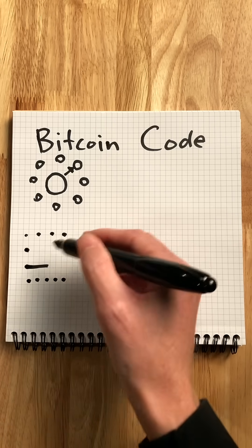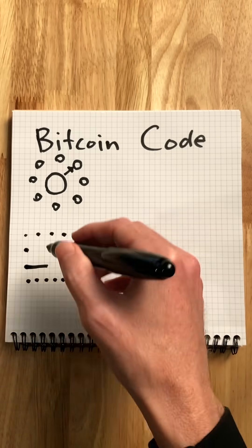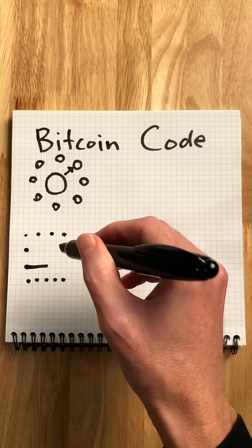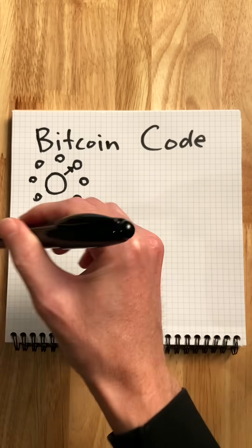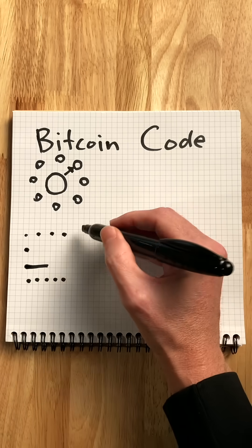The only way a line of Morse code means anything is if everyone using the code agrees on what each pattern or blip sequence means. So blip-blip-blip-blip might represent the letter H.